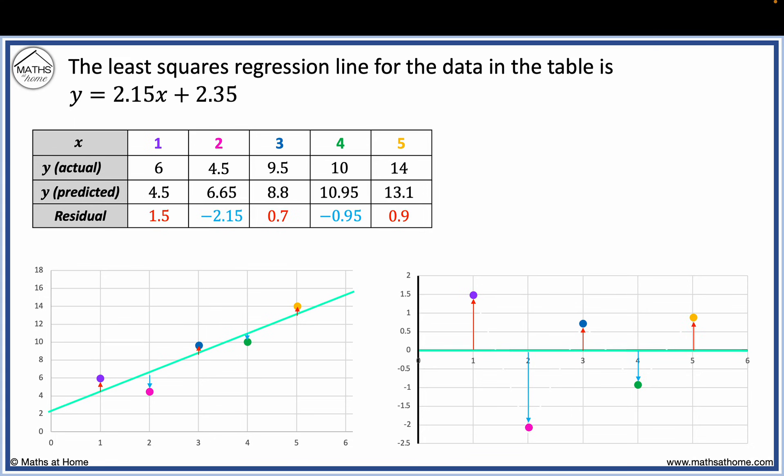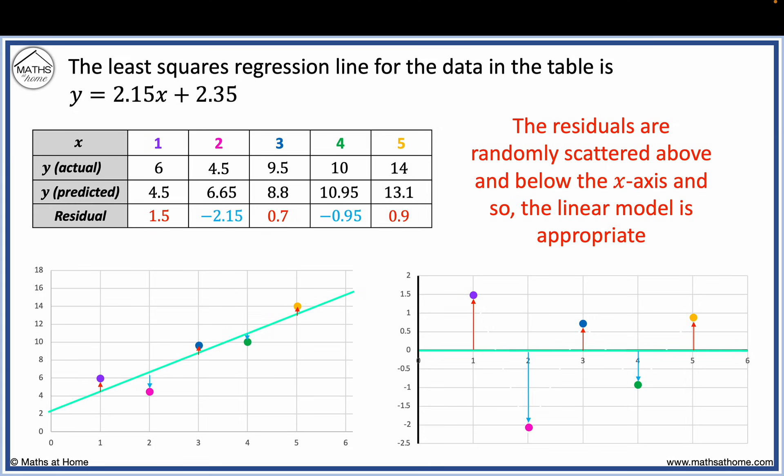Positive residual values in points 1, 3 and 5 are above the axis on the residual plot, while negative residuals are below the axis. The residuals on the residual plot show no clear pattern. They are randomly scattered above and below the x-axis and so the linear regression model appears appropriate.